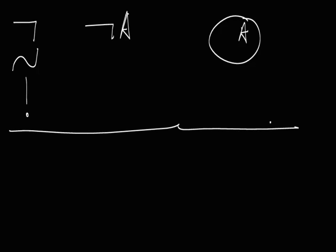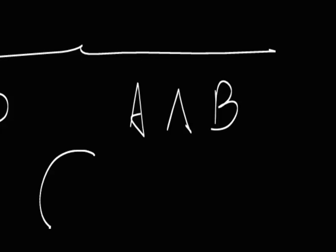Then another classic one is what we call the conjunction sign, which basically you could also call the and sign. So this is a way of saying, for example, set A and set B, which will primarily represent the intersection between these two sets.